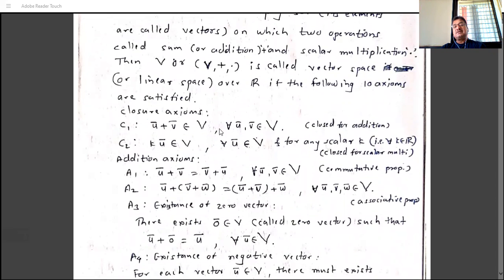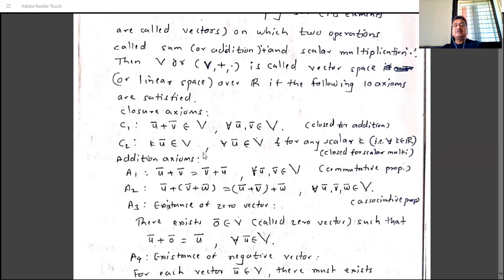The set of natural numbers satisfies C1, since the sum of two natural numbers is a natural number, but any finite subset like {1, ..., 100} does not. The second closure axiom (C2): kŪ belongs to V for all Ū in V and for any scalar k (where k is a real number). If this holds, the set is said to be closed under scalar multiplication.